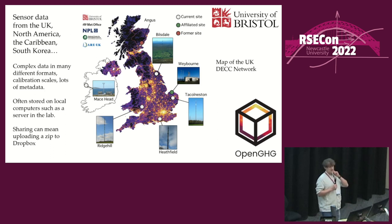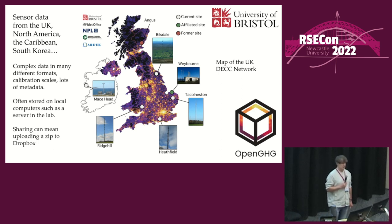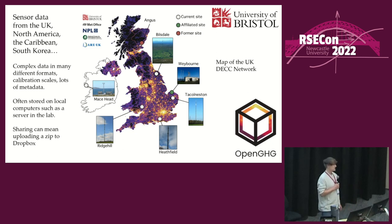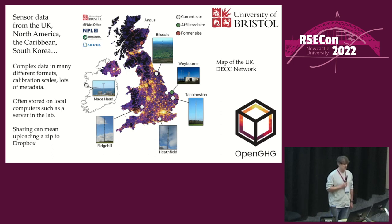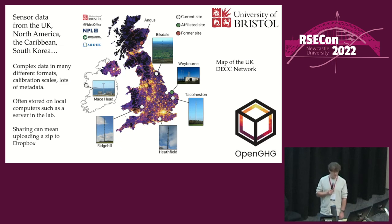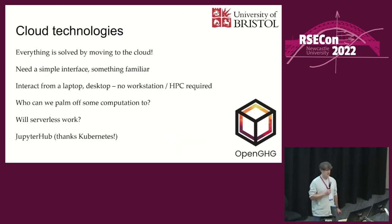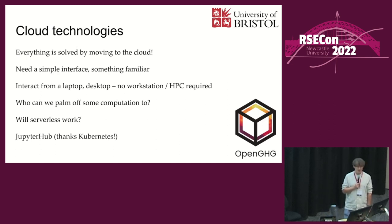This is a map of the DECC network - a tall tower network across the UK - but we get data in from lots of different sources: North America, South Korea, and lots more. It's often in lots of different formats - CSVs, text files, lots of different headers - so you need quite customized parsing functions to process all the data. As I said, it's often stored on local computers, on a server in a lab, or shared via Dropbox or Google Drive.